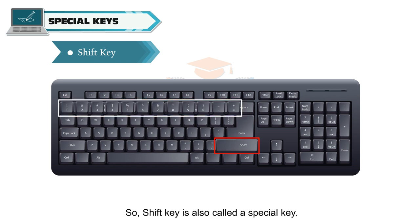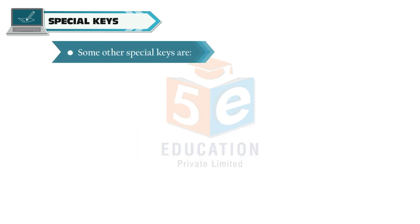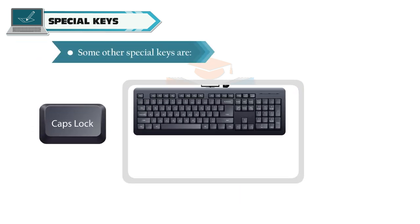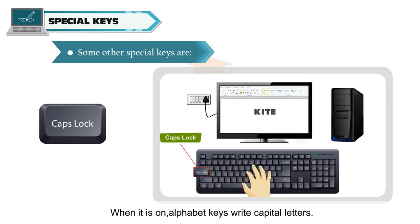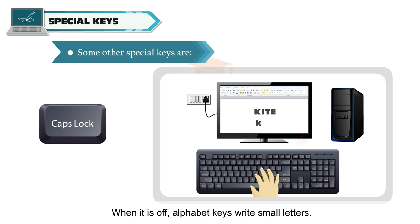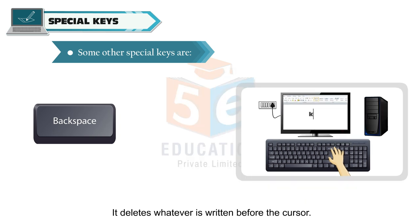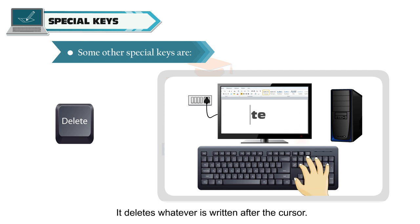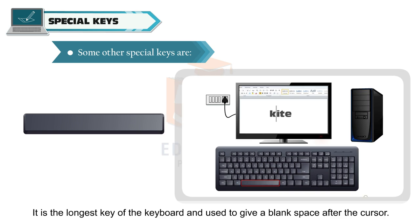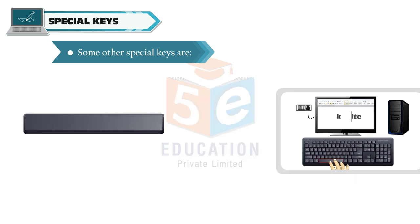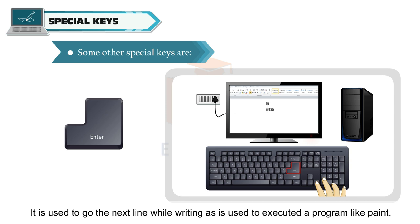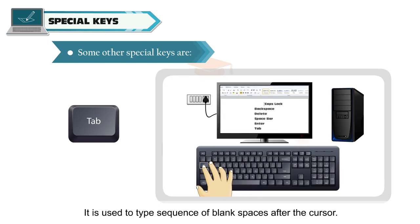The shift key is also called a special key. Some other special keys are: Caps Lock — when it is on, alphabet keys write capital letters; when it is off, alphabet keys write small letters. Backspace deletes whatever is written before the cursor. Delete removes whatever is written after the cursor. Space bar is the longest key of the keyboard and is used to give a blank space after the cursor. Enter is used to go to the next line while writing and to execute a program. Tab is used to type a sequence of blank spaces after the cursor.